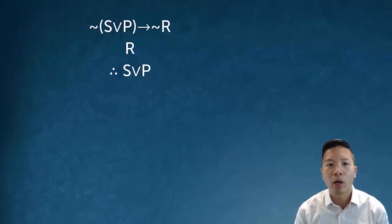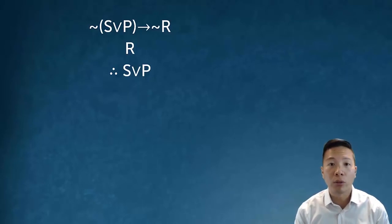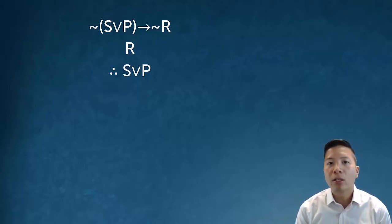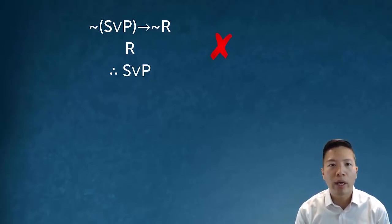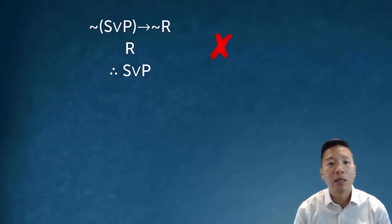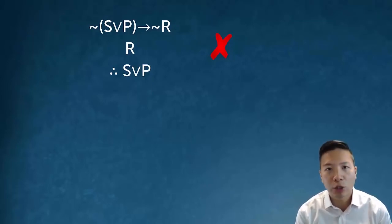How about: not bracket s or p arrow not r; r; therefore s or p? The rule I seem to be appealing to here is modus tollens. The consequent of my conditional is not r, and I also know r, which is surely the negation of the consequent — so I can infer the negation of the antecedent, which is s or p. Although it looks like modus tollens, in fact this is no good. Modus tollens literally says I need the negation of the consequent. The consequent is just not r, so I would need negation negation r to apply modus tollens.